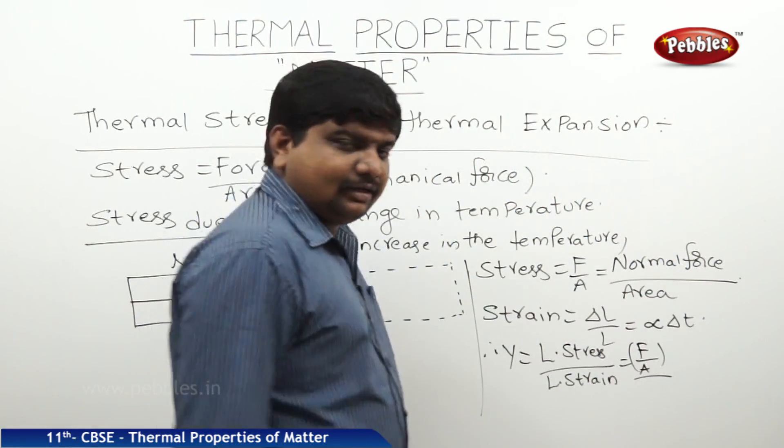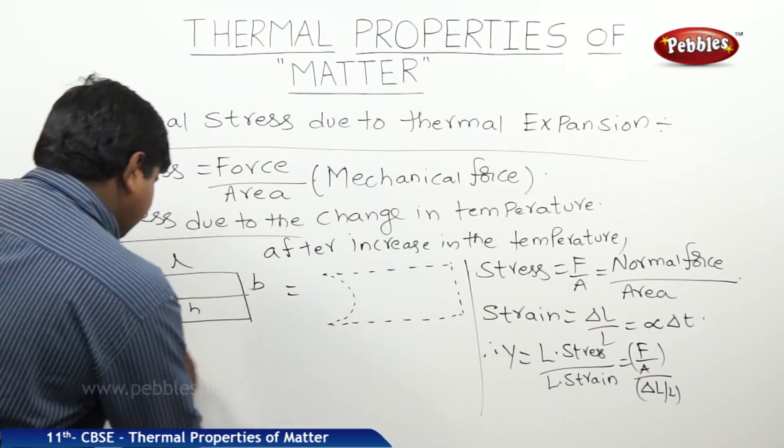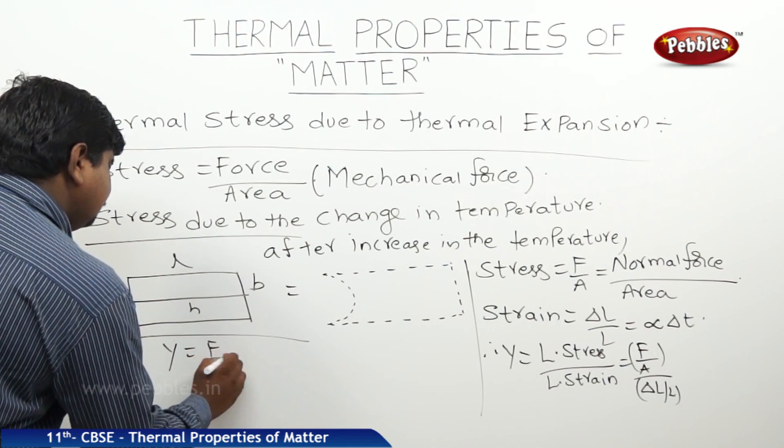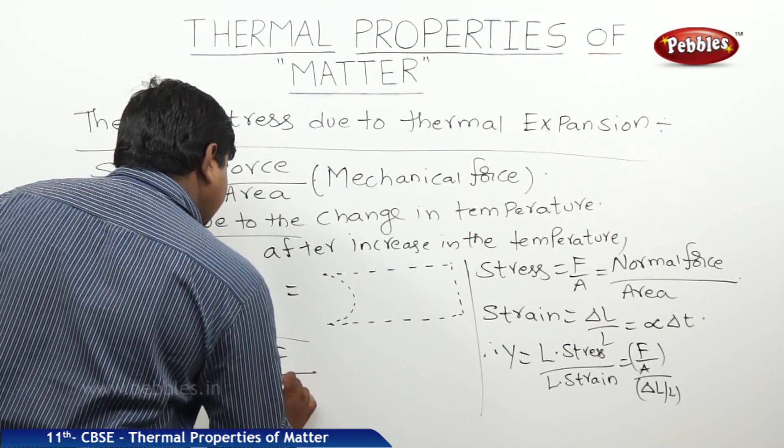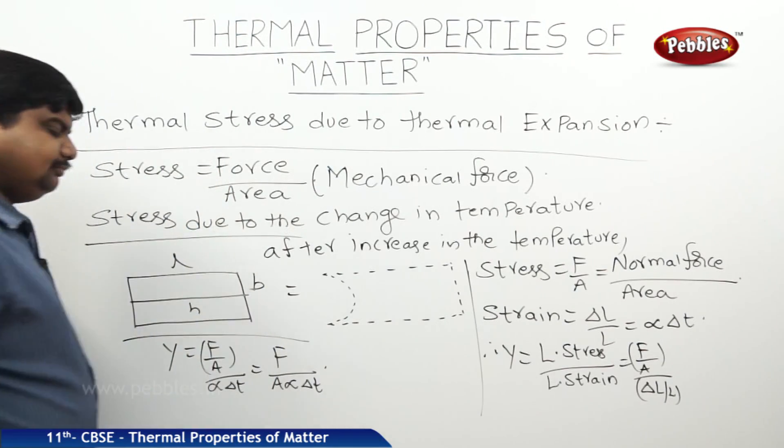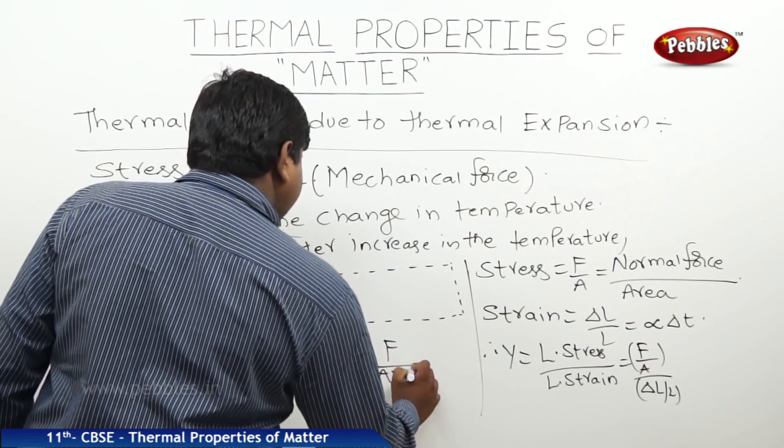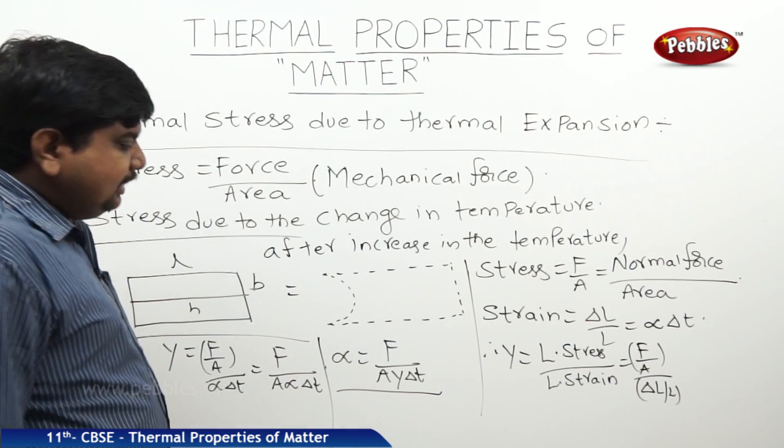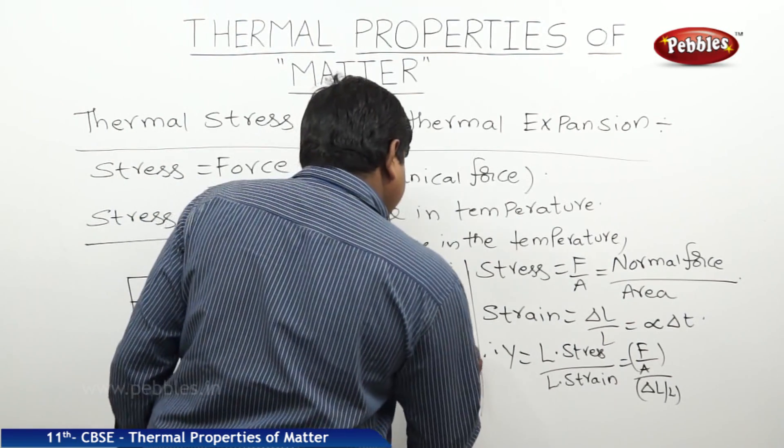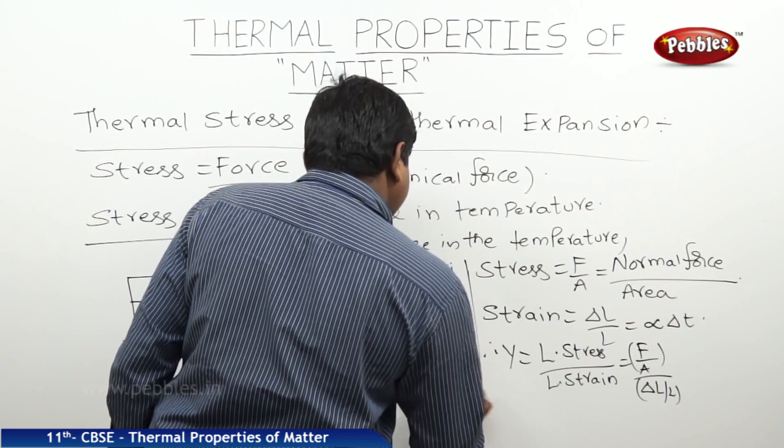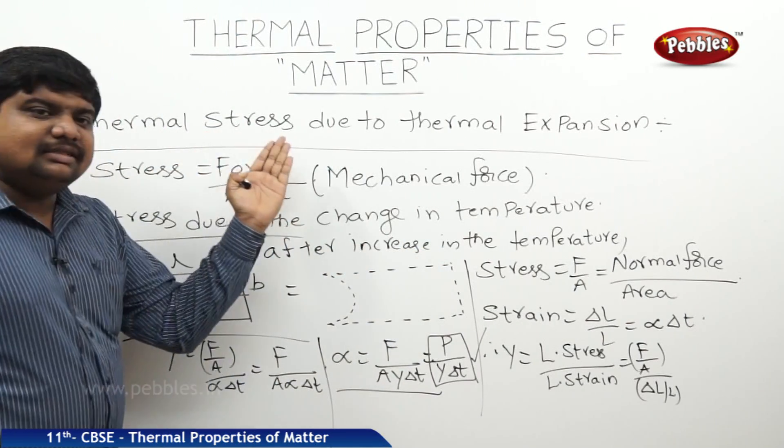What is the longitudinal strain? Delta L by L. But, we know that delta L by L is equal to alpha delta t. Therefore, Young's modulus is equal to F by A by alpha delta t. That is equal to F by A alpha delta t. From this alpha is equal to F by A y delta t. Where y is equal to Young's modulus. We can write F by A is also like a pressure. Therefore, P by y delta t also we can write. Like this we can simply discuss the thermal stress.